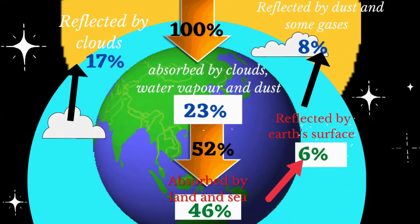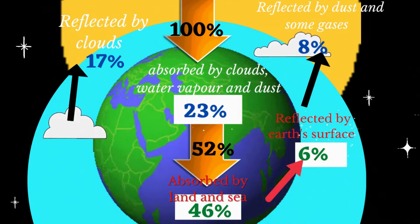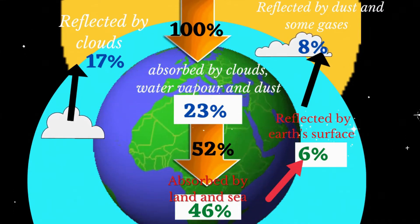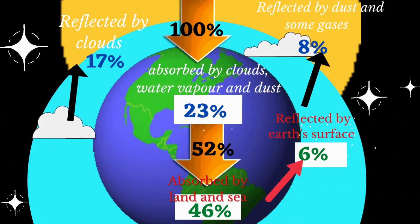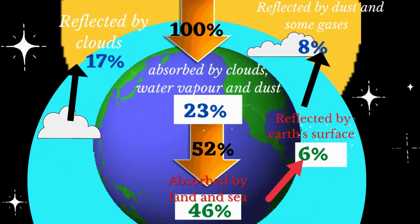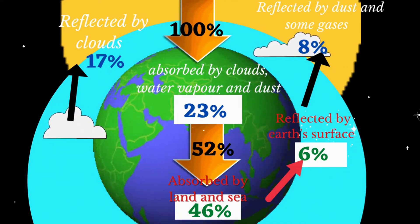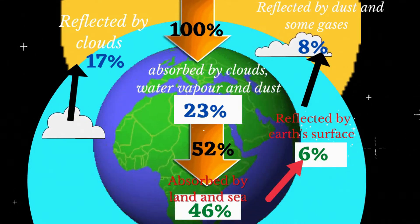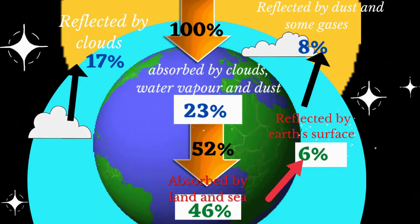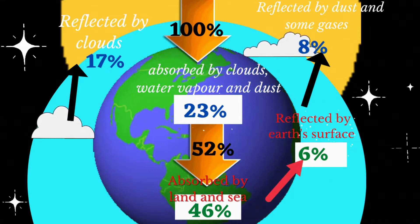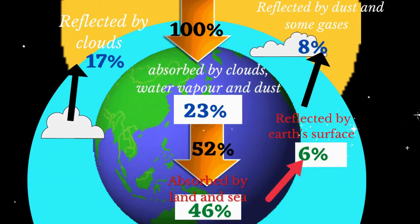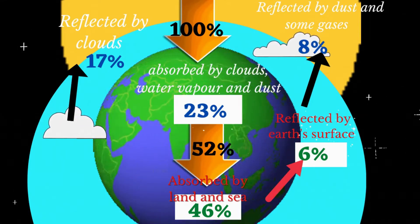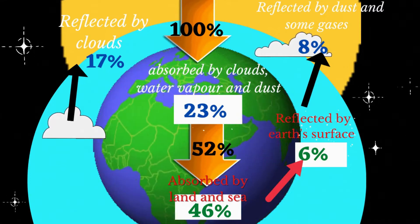Radiation is absorbed by atmospheric elements such as ozone and clouds. When radiation is absorbed, it increases the temperature of the object which absorbs it.